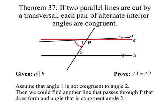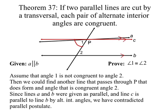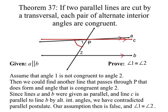We could then find another line that passes through P that does form an angle congruent to angle 2. Since lines A and B were given as parallel, and line C is parallel by alternate interior angles, we have contradicted the parallel postulate — we have two lines passing through the same point that are both parallel to a third line, and the parallel postulate says there can only be one. Because of that contradiction, our assumption is false.